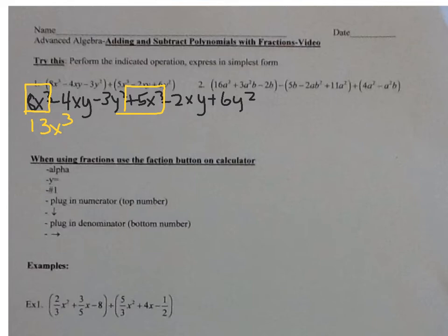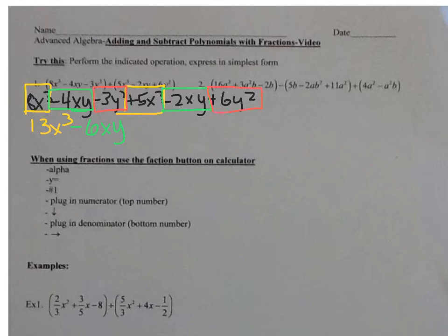Next I have an xy here, negative 4xy. I'm looking for another xy — I see the negative 2xy. So negative 4 minus 2. Remember, the signs in front go with it. Negative 4 minus 2 is negative 6, so it's negative 6xy. If you're having a hard time with the signs, use your calculators. Then we have a y squared: negative 3y squared and a positive 6y squared. Negative 3 plus 6 is positive 3, so it's positive 3y squared.